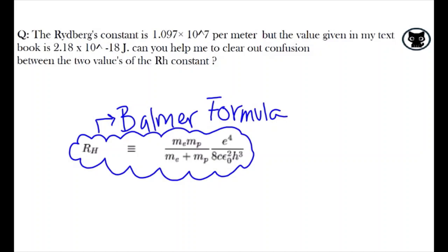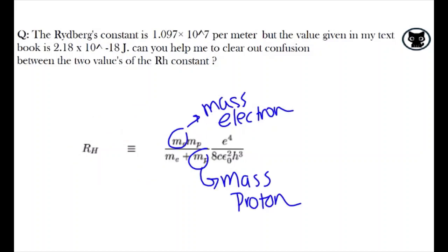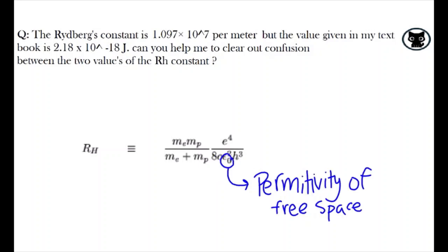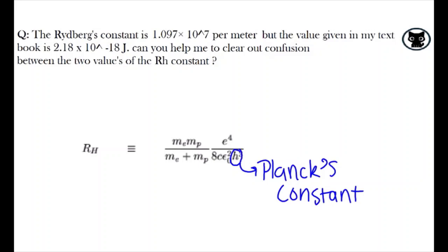The constant appears in the Balmer formula. Me and mp refer to the mass of the electron and proton respectively. e represents the electron's charge, c the speed of light, epsilon0 the permittivity of free space, and h, Planck's constant.